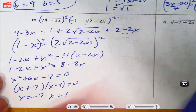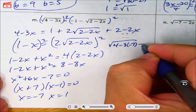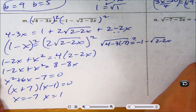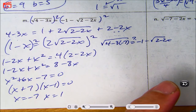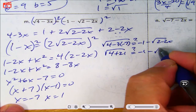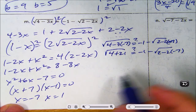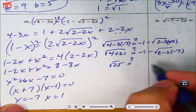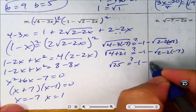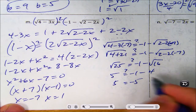Let's plug in x = negative 7. Square root of 4 minus 3(negative 7) equals square root of 4 plus 21 = square root of 25 = 5. On the right: negative 1 minus square root of 2 minus 2(negative 7) = negative 1 minus square root of 16 = negative 1 minus 4 = negative 5. So 5 does not equal negative 5 — this one doesn't work.